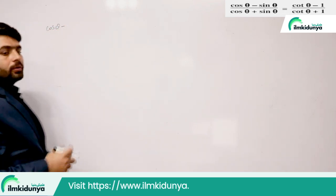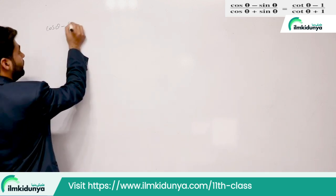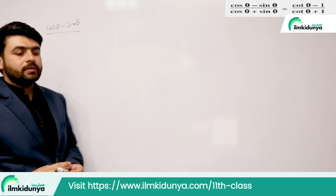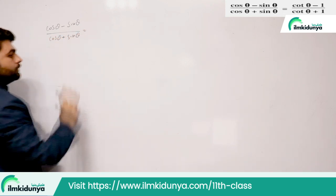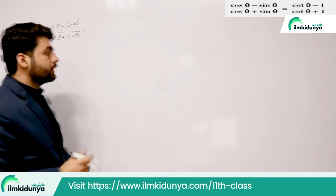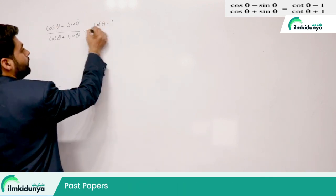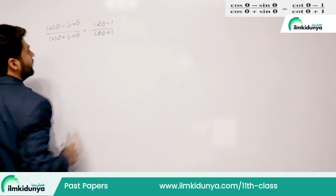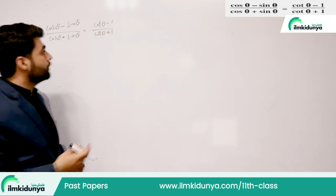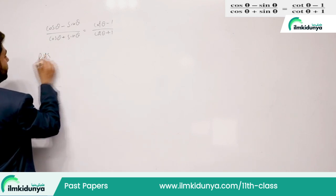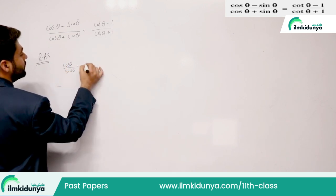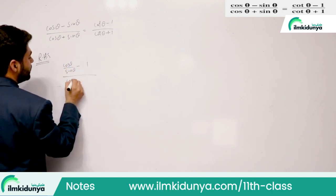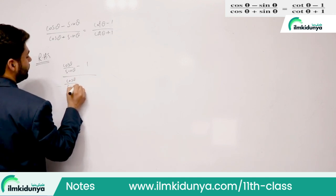Today's last question: (cos θ − sin θ) over (cos θ + sin θ) = (cot θ − 1) over (cot θ + 1). Dividing numerator and denominator by sin θ gives (cos θ/sin θ − 1) over (cos θ/sin θ + 1), which equals (cot θ − 1) over (cot θ + 1) — the right-hand side. Hence proved.